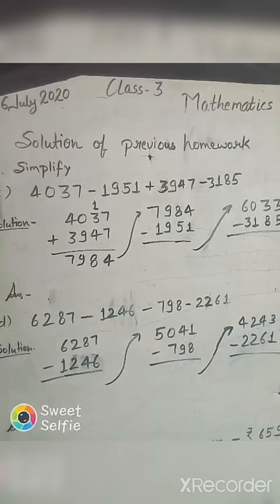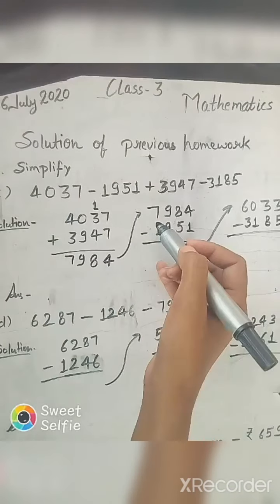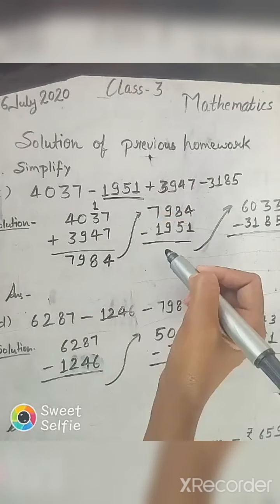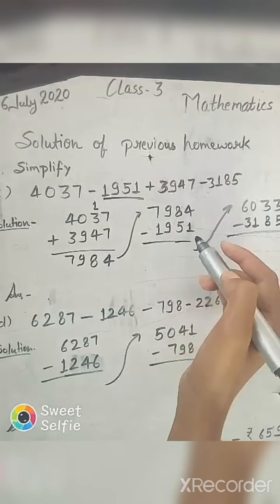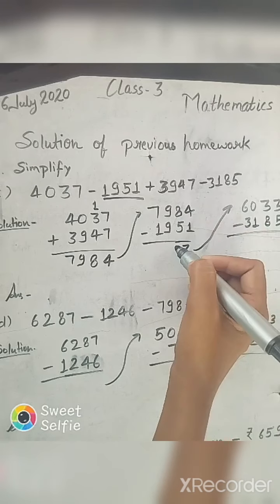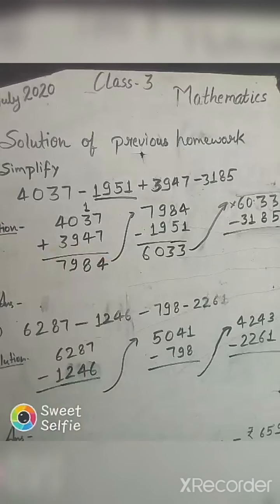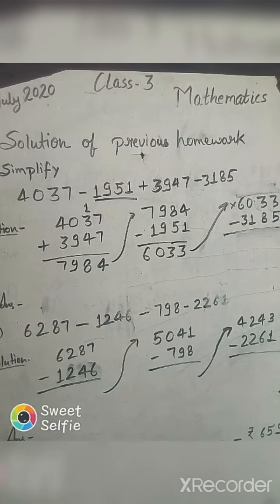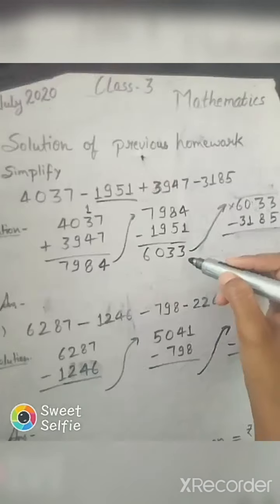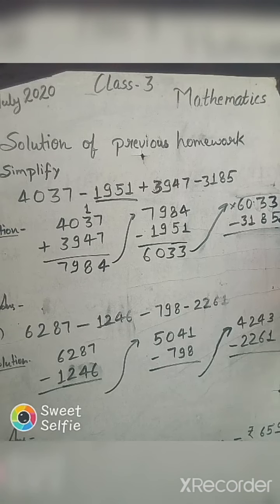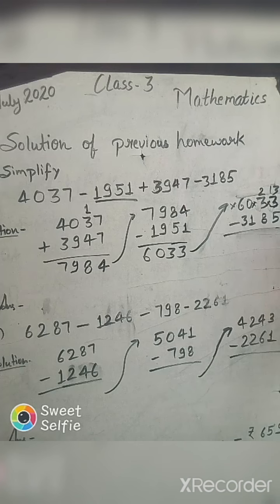So next: 7984 minus 1951. Four minus one is three, eight minus five is three, nine minus nine is zero, and seven minus one is six. So we get 6033. Now we have to subtract 3185 from 6033. Let's start subtracting: we have to subtract five ones from three, so we can't subtract, so we will borrow from tens. Then here will be only two and here thirteen. Thirteen minus five is eight.